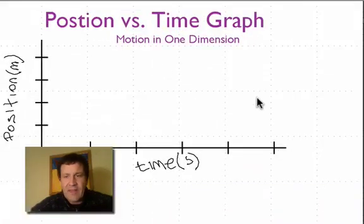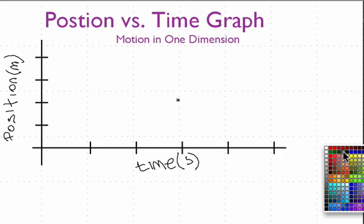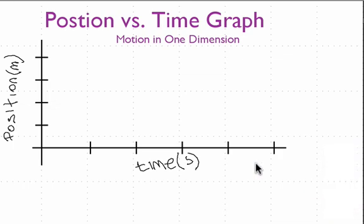Now let's look at one where the slope is not constant — where the slope is actually changing over time. In this case, we will show you a couple different lines. On the graph, I don't have any numbers; we're not going to quantify anything. We're just going to talk about it qualitatively. Here's position, here's time — we have position versus time, and once again, this is motion in one dimension.